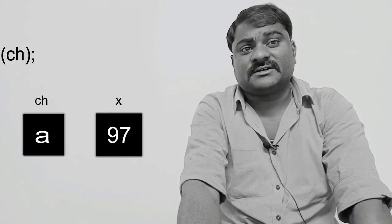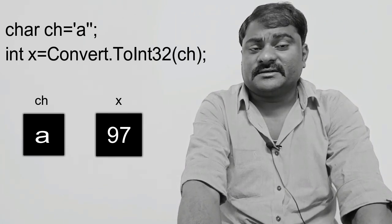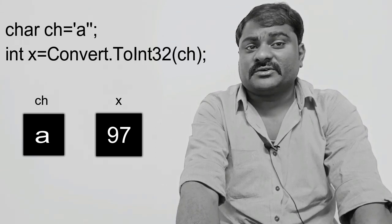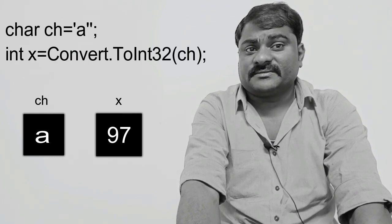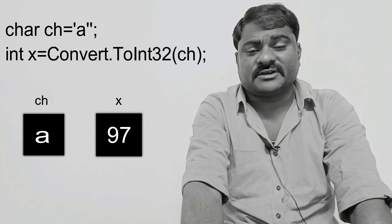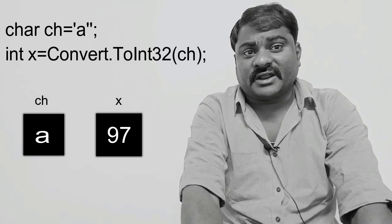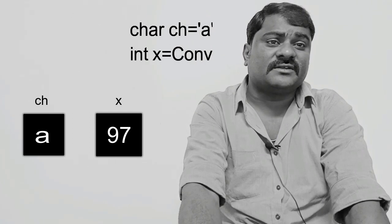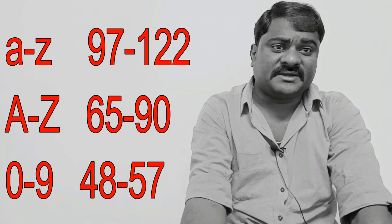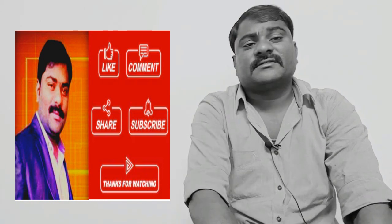Similarly, if you want to convert char to int: char ch equal to 'a', int x equal to Convert.ToInt32(ch). What happens when we convert char to int? The ASCII value of the character will be stored in the integer variable. Every character — alphabets, numbers, digits, or special characters — has an ASCII value. For example, small a to small z, capital A to capital Z, and 0 to 9 all have ASCII value ranges. These are the questions they will ask mostly on data types and typecasting.